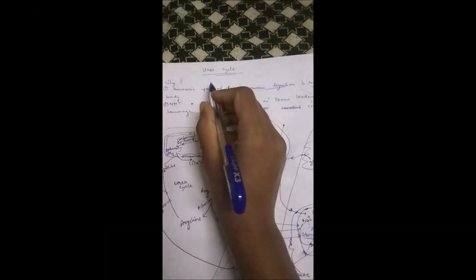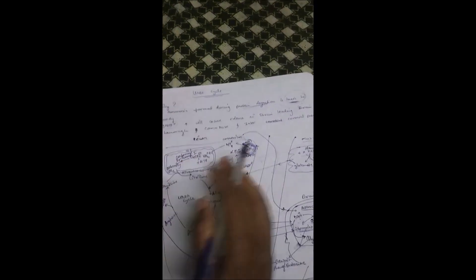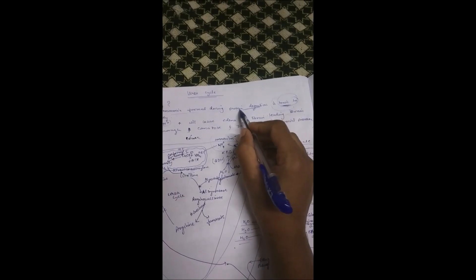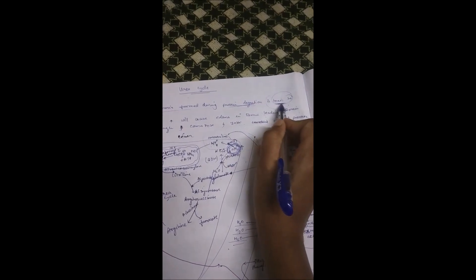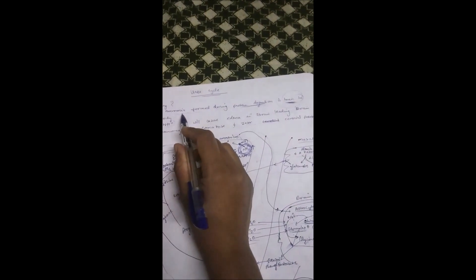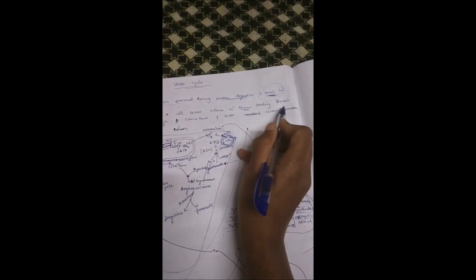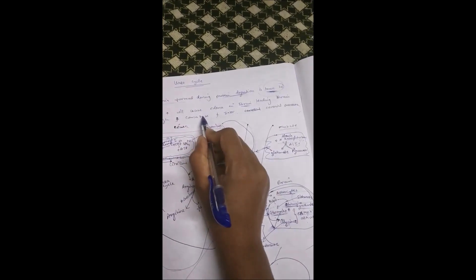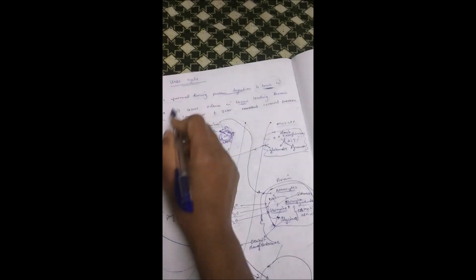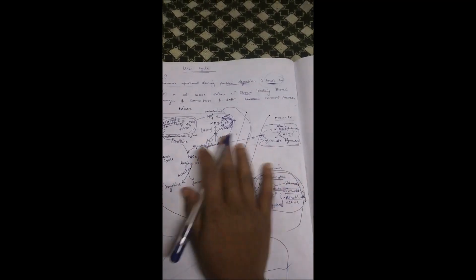The urea cycle is important in our body because ammonia is produced from protein degradation, which is very toxic. This ammonia is very toxic because it will go inside the brain, leading to brain hemorrhage, coma, or increased intracranial pressure, which we will discuss in this urea cycle.